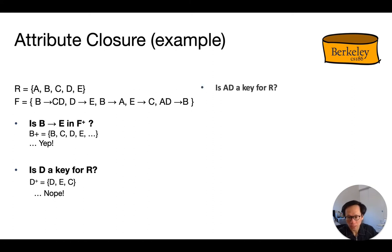Another example. Is AD a candidate key for R? Well, we have A and D to start with in the closure. And once we have D, we also have E because D determines E. And with E, we've got E determines C. And now with A and D, we also have AD determines B. So we've got on the right-hand side A, B, C, D, and E. And so AD does indeed determine R, since the closure of AD has all the attributes in it.